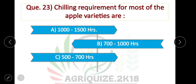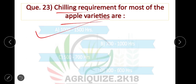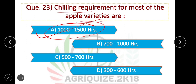Question: The chilling requirement for most apple varieties is 1000 to 1500 hours. That is, 1000 to 1500 hours are required as the chilling requirement for most apple varieties.